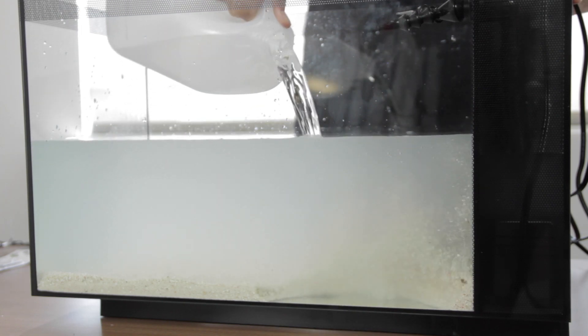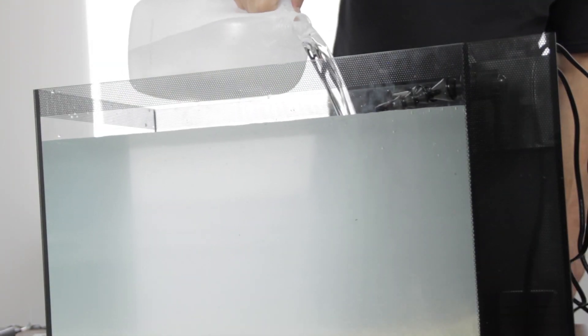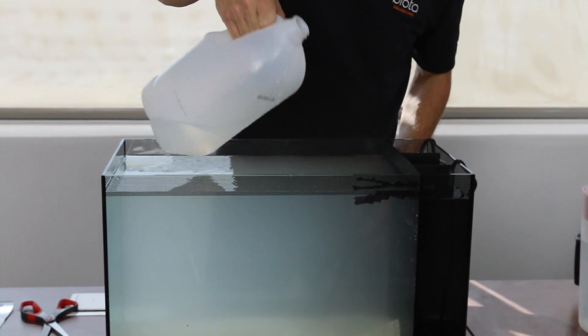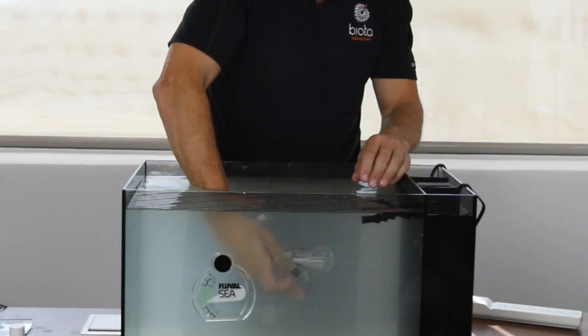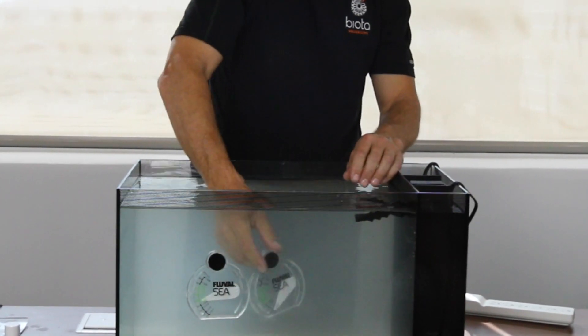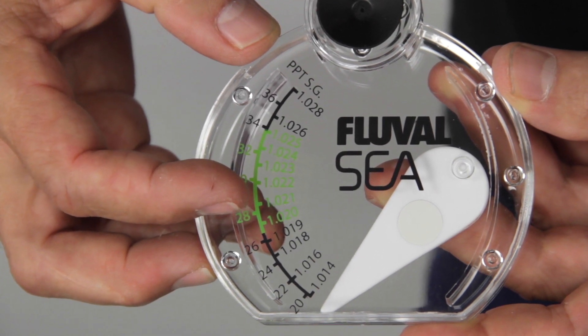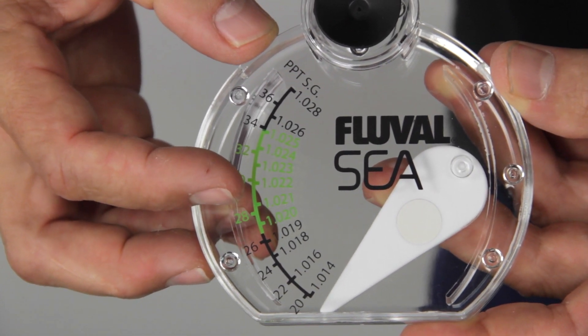Fill the remainder of the tank to just below the dotted decal at the top of the glass. To check the salinity of the water, fill the hydrometer with tank water and look to make sure that it reads in the green safe zone of measurements.